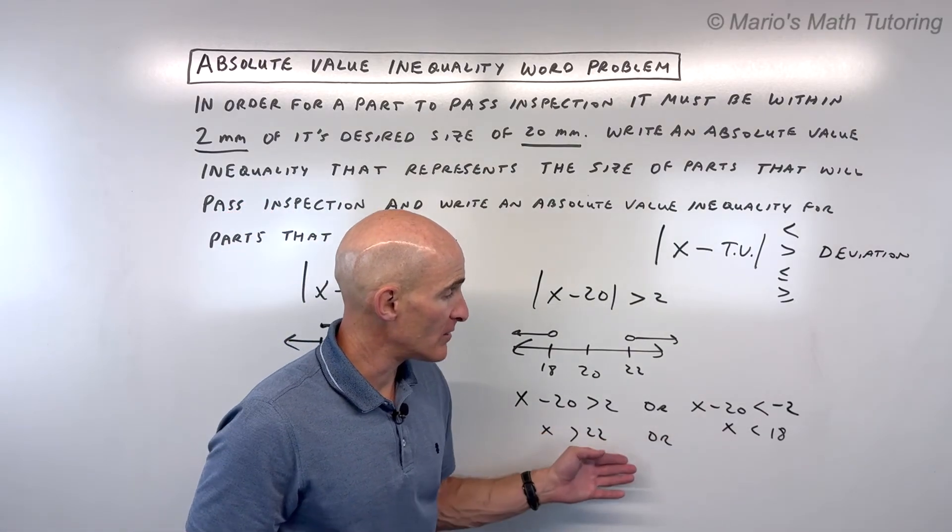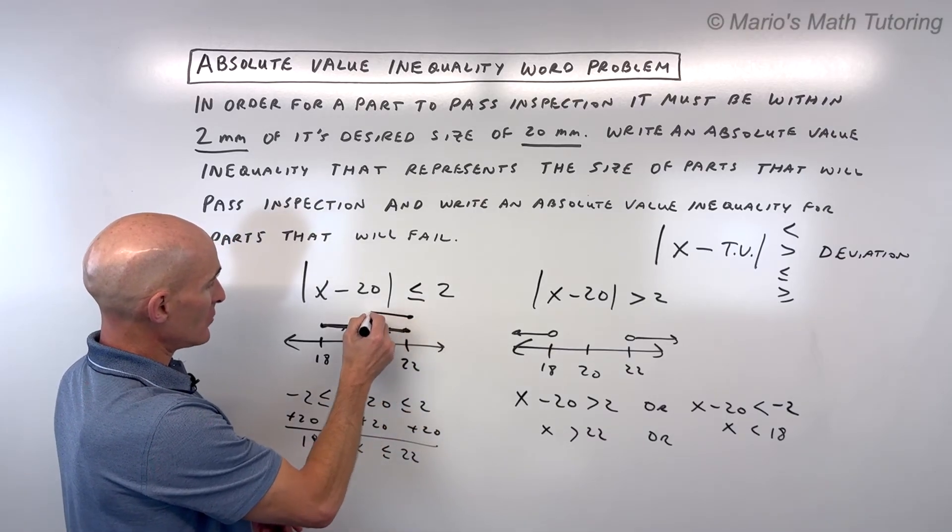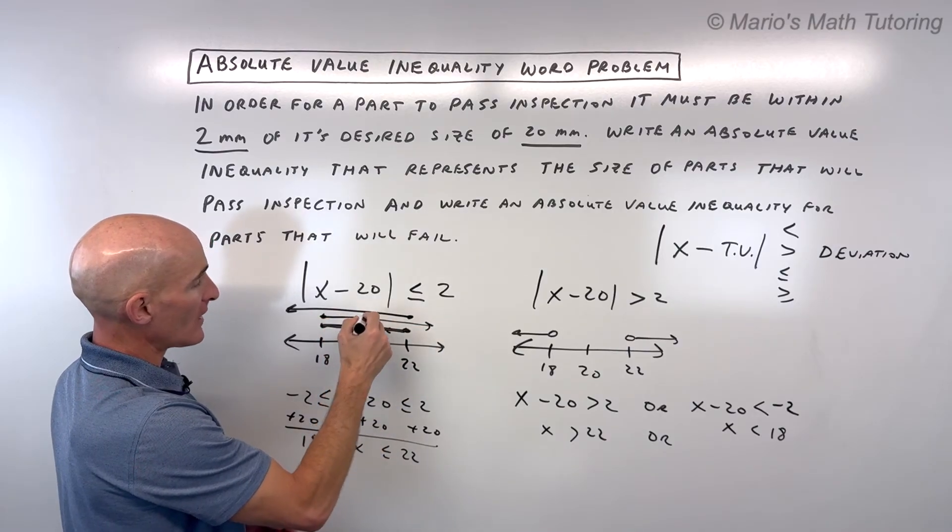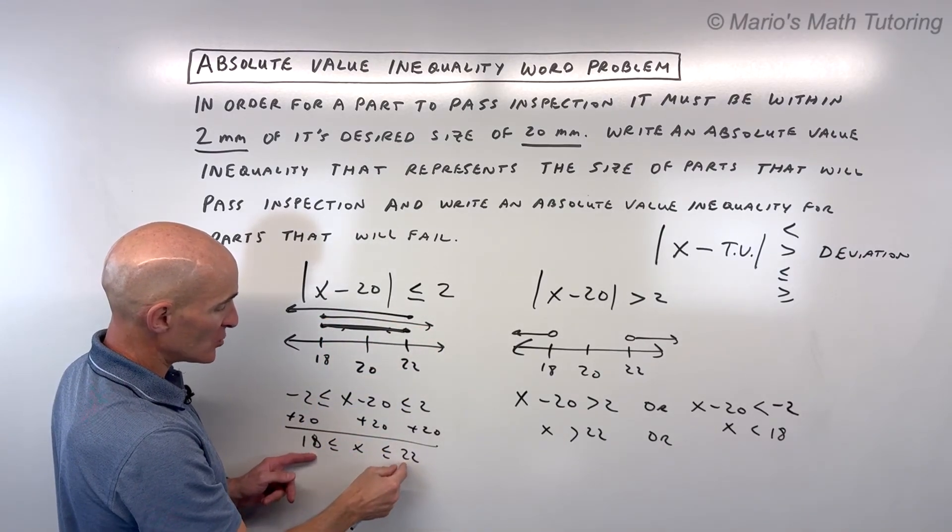'Or' means both categories, and 'and' means the intersection. It's less than or equal to 22 and greater than or equal to 18. That's the overlap or intersection—the parts between 18 and 22 inclusive.